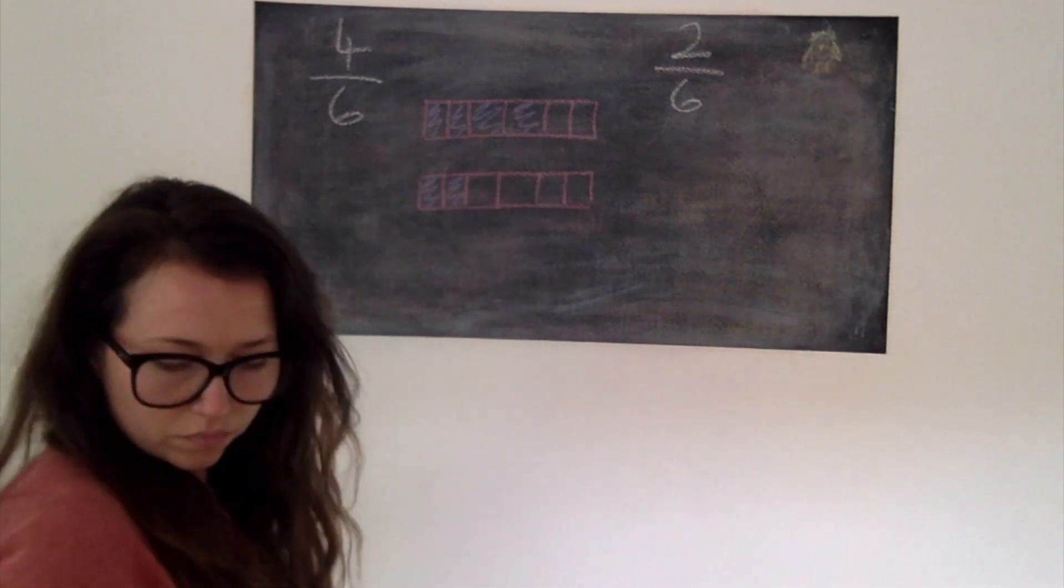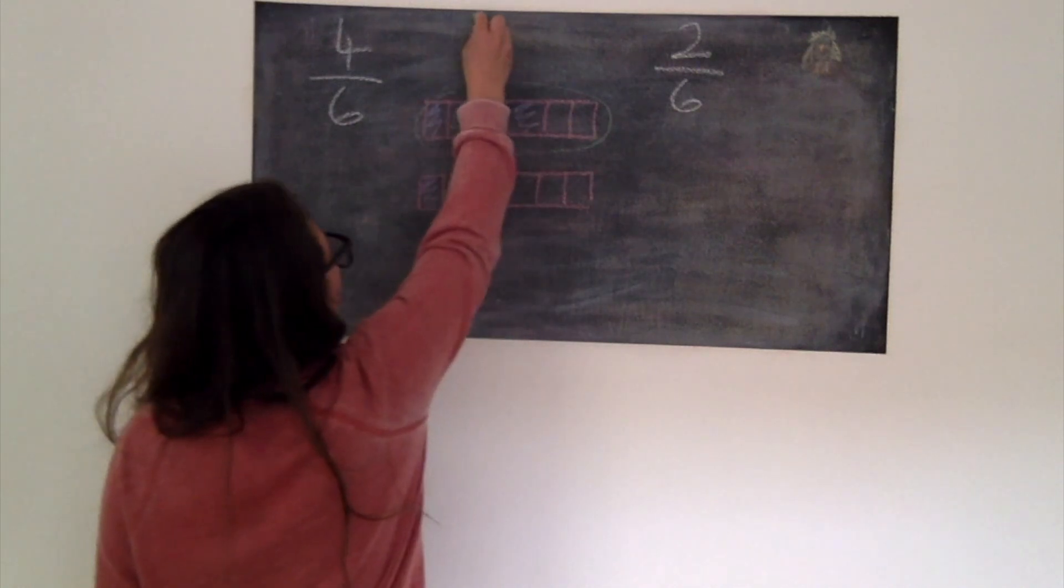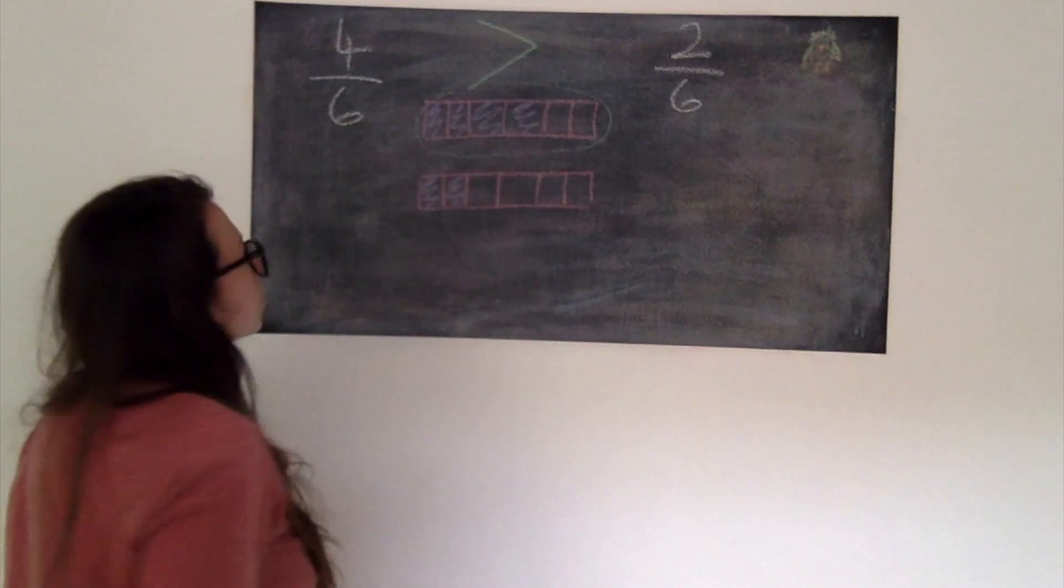Hopefully you can see there that 4 pieces is better to have out of the 6 than the 2 and therefore 4/6ths is greater than 2/6ths.